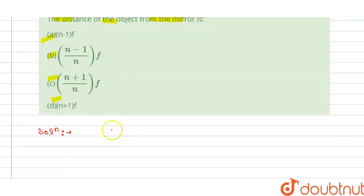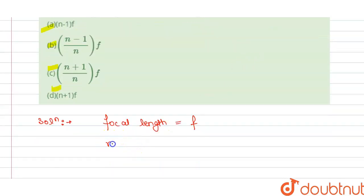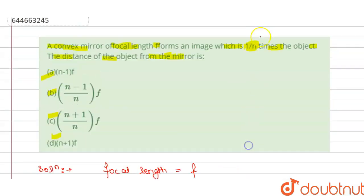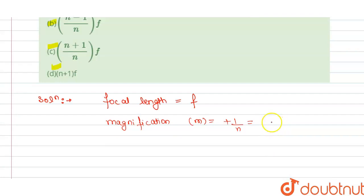The solution: we have a convex mirror of focal length f, so focal length equals f. The image is one by n times the object, so magnification m equals one by n. We know that the magnification formula is m equals minus v divided by u.